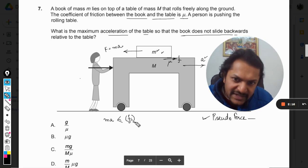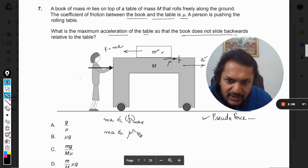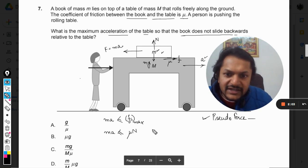We know that limiting friction can be written as μ times N, the normal reaction. Normal reaction is this and this is the weight, so in this case, normal reaction equals mg.